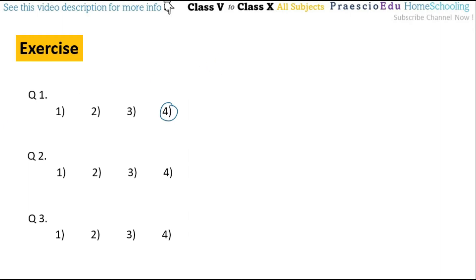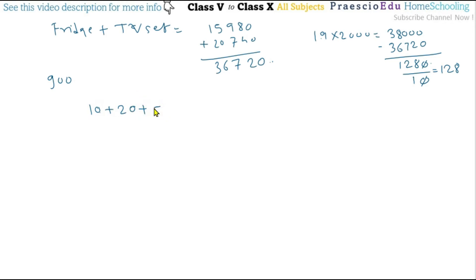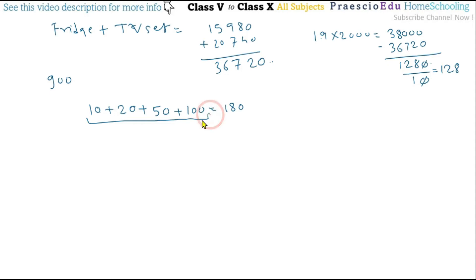Question number two: Srikant bought a watch for rupees 900. He gave equal number of notes of denominations rupees 10, rupees 20, rupees 50, and rupees 100. So the collective value of one note each is 10 plus 20 plus 50 plus 100 equals 180 rupees.